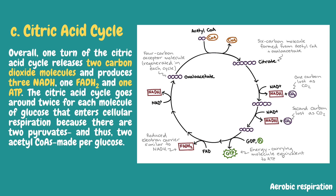In the first step of the Krebs cycle, acetyl-CoA combines with a 4-carbon acceptor molecule known as oxaloacetate to form a 6-carbon molecule called citrate. After a quick rearrangement, this 6-carbon molecule releases two of its carbons as carbon dioxide in a pair of similar reactions, producing a molecule of NADH each time. The enzymes that catalyze these reactions are key regulators of the citric acid cycle, speeding it up or slowing it down based on the cell's energy needs.